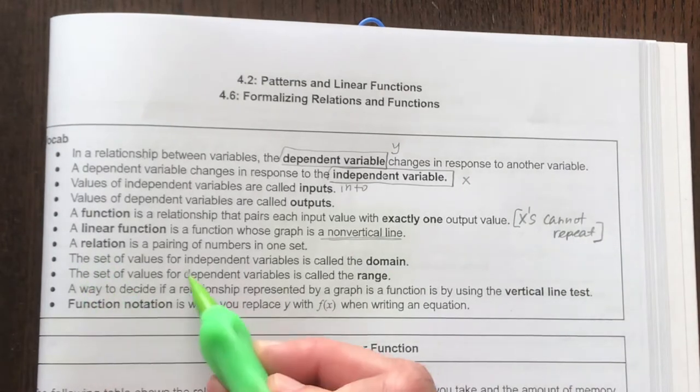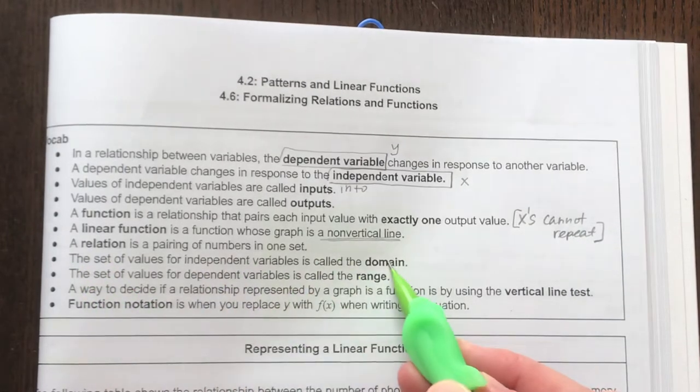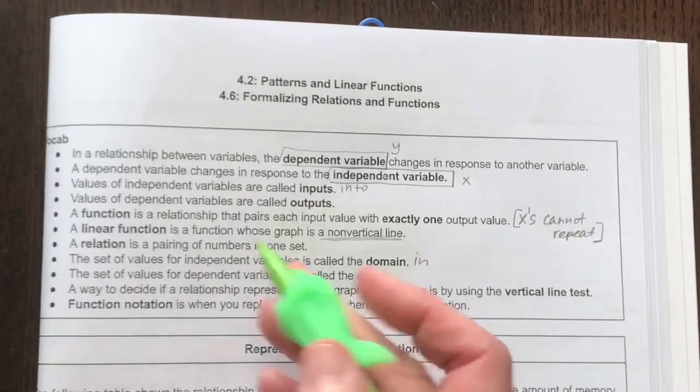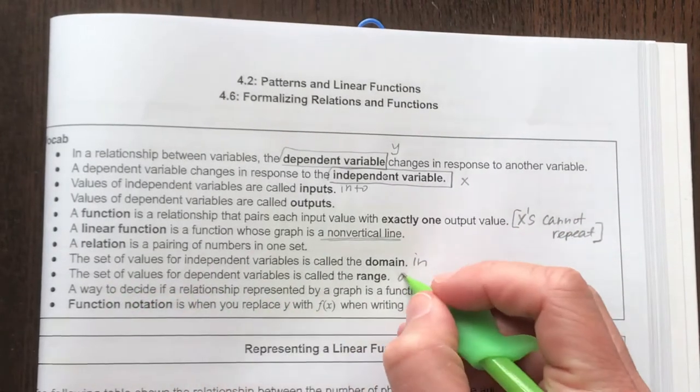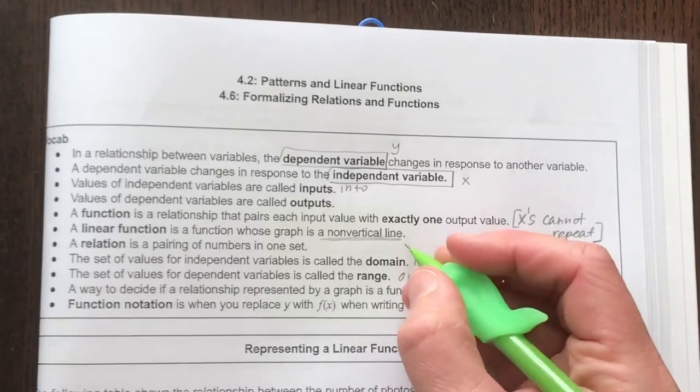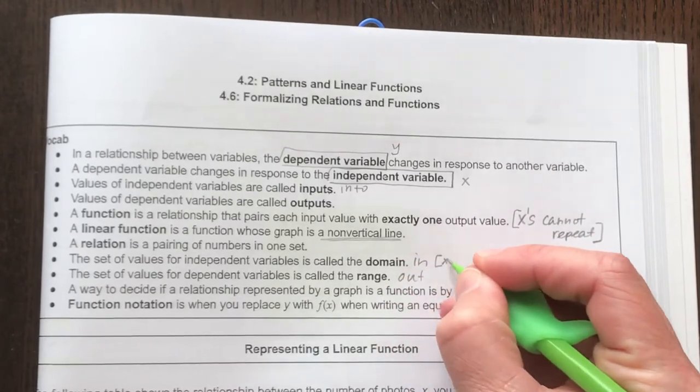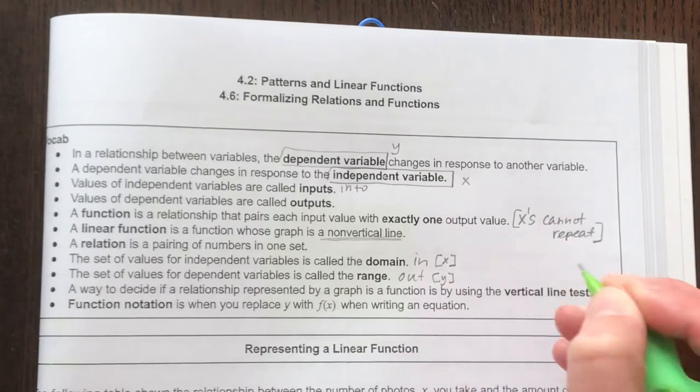Then it says here the set of values for independent variables is called the domain. That's what you put in the function. And then the values that you get out is the range. So essentially what you put in the function is your x, and what you get out is your y.